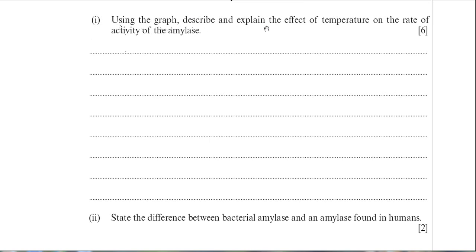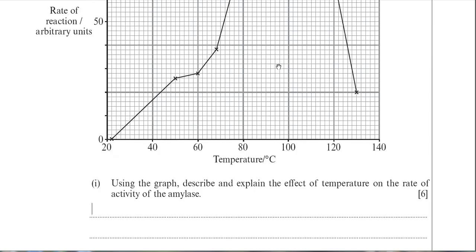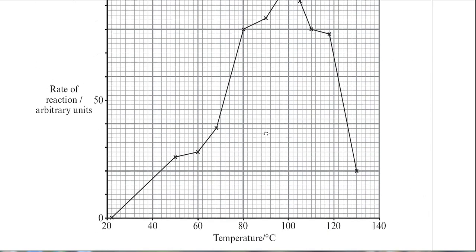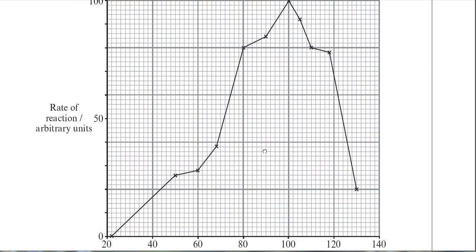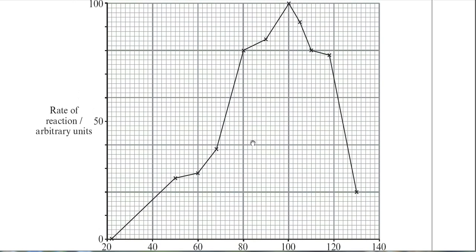The question says: using the graph, describe and explain the effect of temperature on the rate of activity of amylase. A key tip: whenever you're asked to describe a table of results or a graph, always quote values — quote values from both the temperature scale and the rate of reaction scale. That will ensure you get good marks.